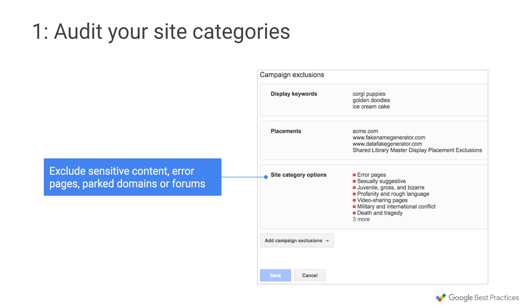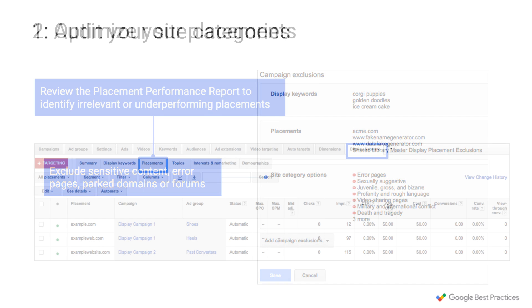First, you'll want to audit your site categories. Most brands would want to exclude sensitive content, error pages, parked domains, or forums. You can add these exclusions through the display network tab of the AdWords user interface.